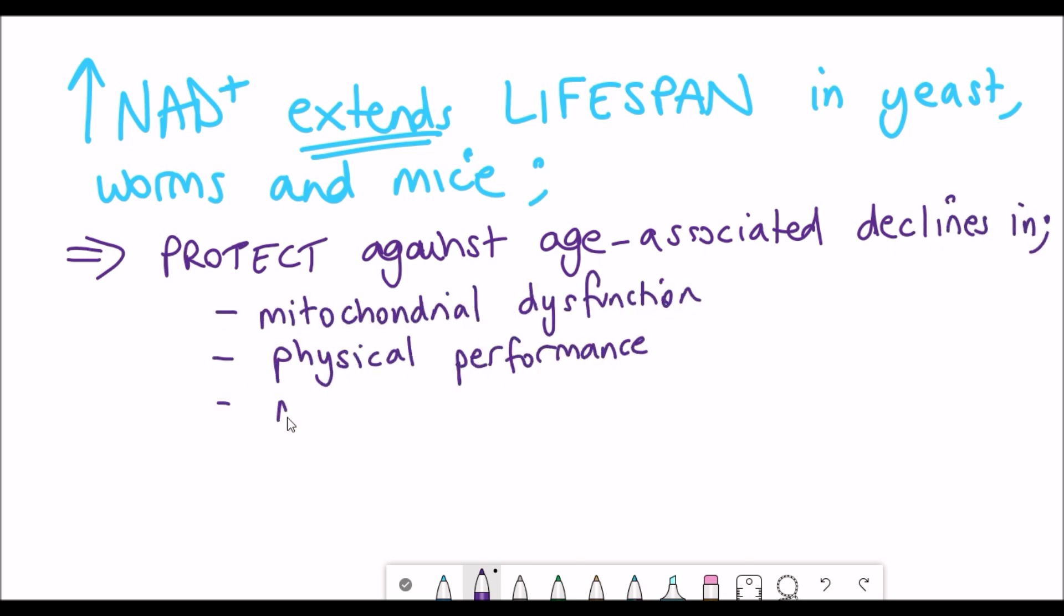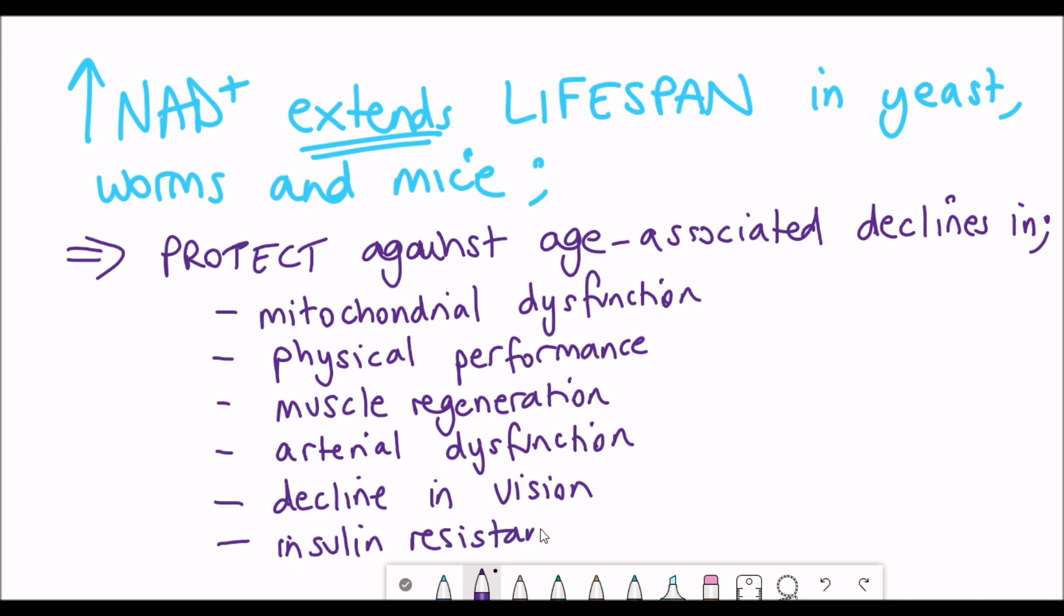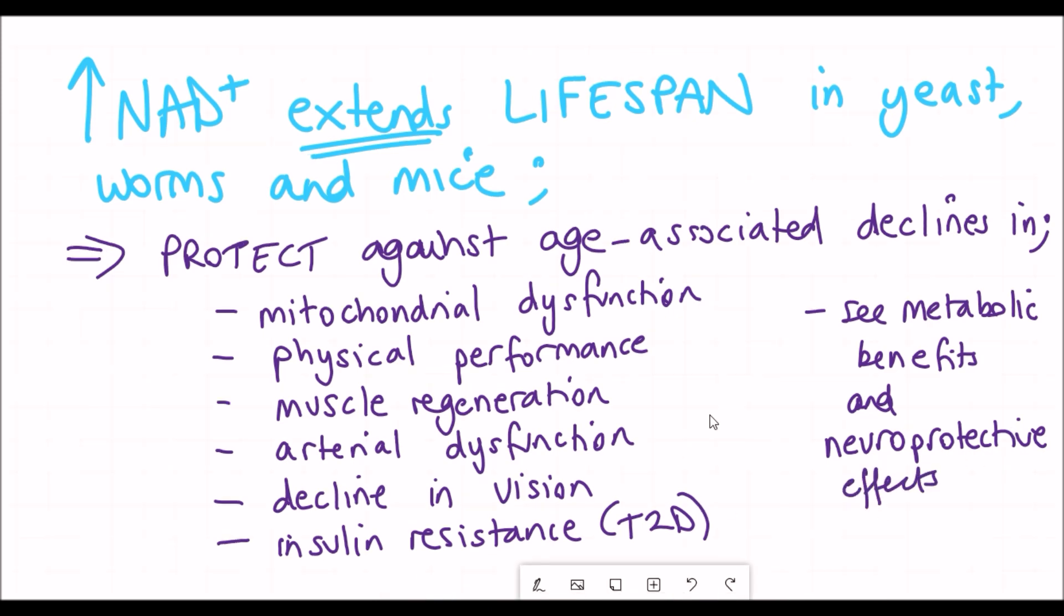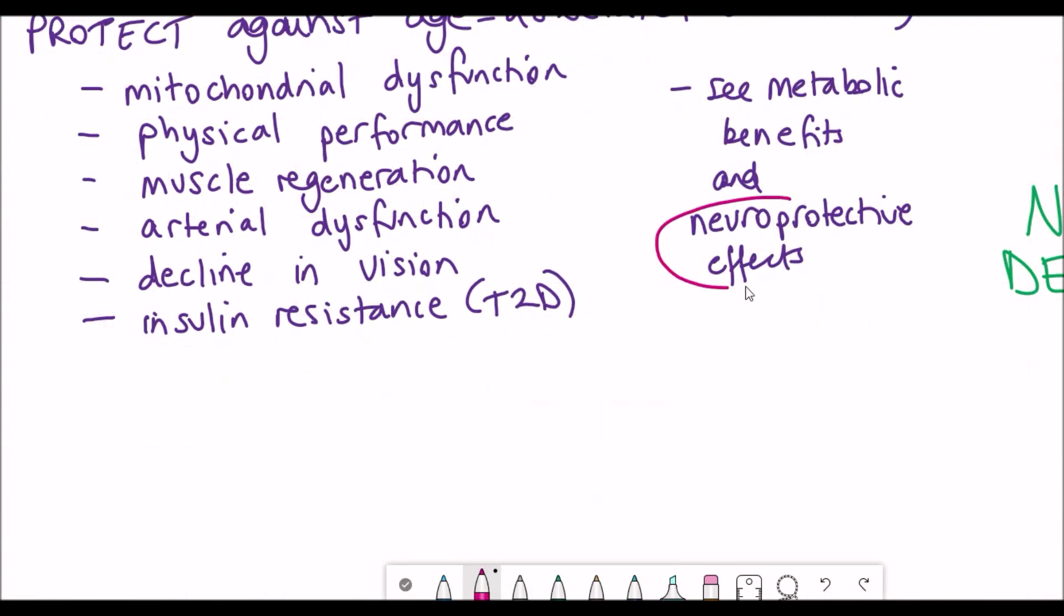But most of these studies have been done in organisms such as mice. But the fact that they saw improvements in physical performance, muscle regeneration, and help to prevent decline in vision, these are all really outstanding phenotypes that they saw in these studies, even the one about improvements in neuroprotective benefits.